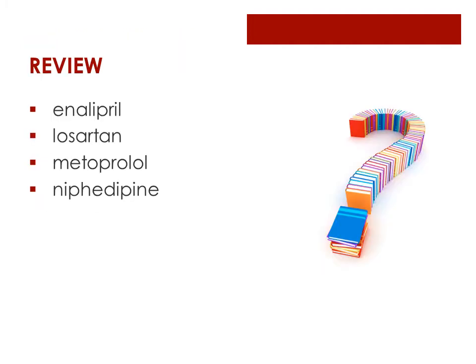Let's do a quick review. Enalapril — that's an ACE inhibitor, with side effects of headache, cough, taste disturbance, and angioedema. Losartan — that's our ARB. Metoprolol, ending in -olol — that's our beta blocker, with bradycardia, blood sugar changes, and bronchospasm. Nifedipine, ending in -pine — see the cow? That's our calcium channel blocker.